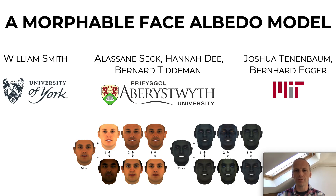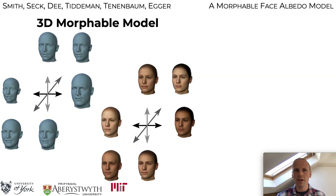Morphable face albedo model. 3D morphable models are generative models that separate physical properties of an object class — specifically geometry and texture — from scene properties such as lighting and camera pose. Existing models use textures that are ill-defined, usually baking in shading, shadowing, specularities, light source color, and so on.